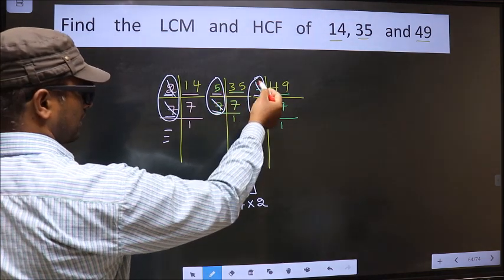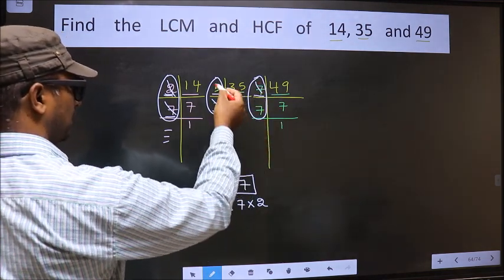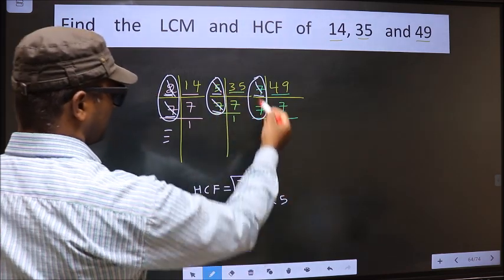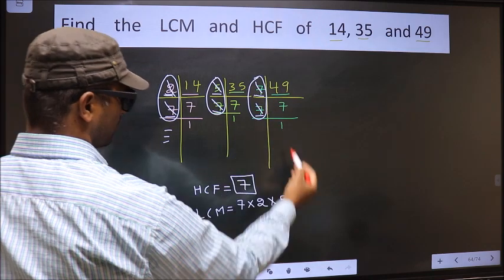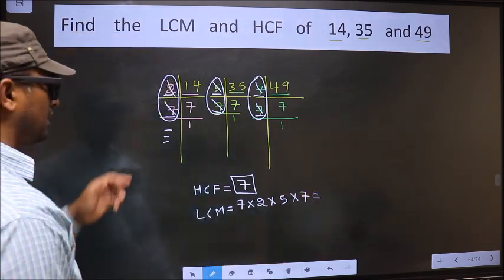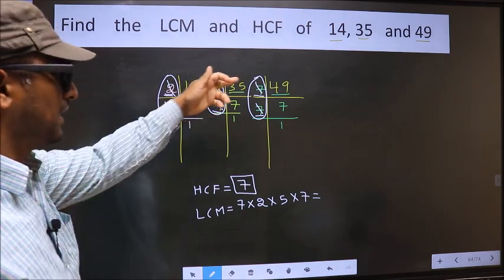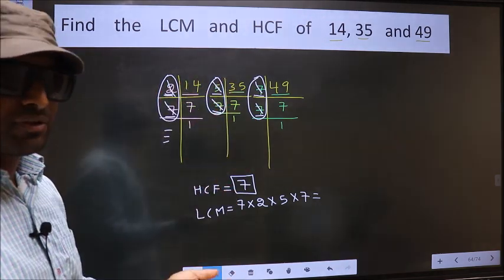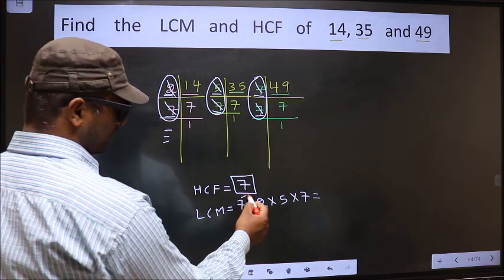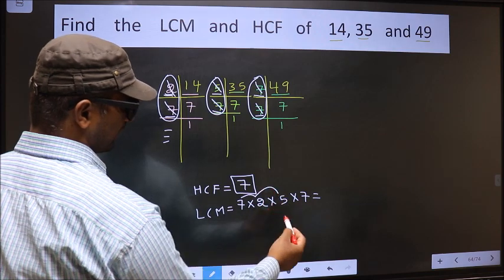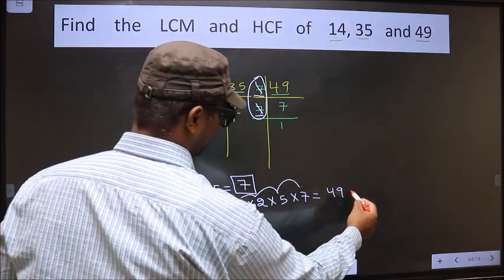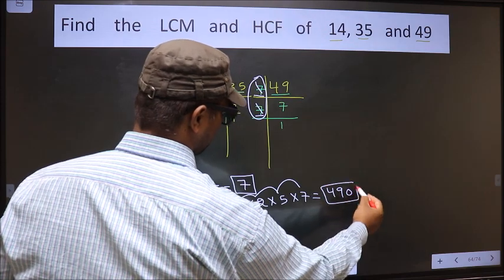Now 5 is not cut. Do we have 5 here? No. 5 appeared only once. So you cut 5 and write here. Now here, 7 appeared only once. So you cut 7 and write here. Now each number has been cut. Therefore, our LCM is 7 into 2, 14, into 5, 70, into 7, 490 is our LCM.